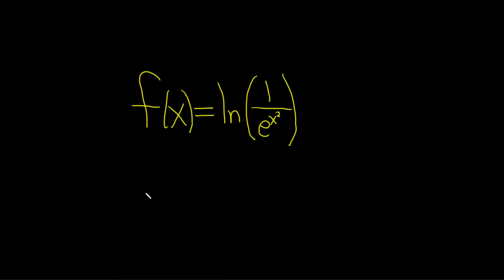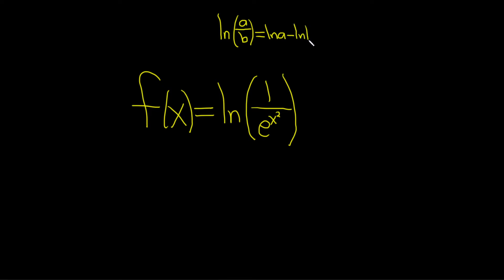In this problem, we're being asked to find the derivative of this function. To do this, we're going to start by using one of the properties of logarithms. If you have the natural log of a over b, this is called the quotient rule. You get the natural log of a minus the natural log of b.